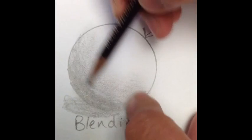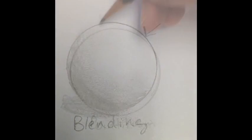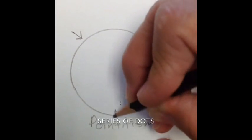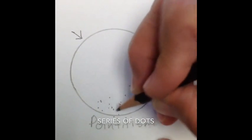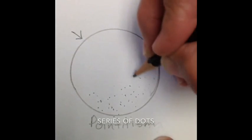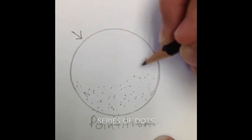Pause the video to finish your blending technique. Our last shading technique that I'm having you do is called pointillism. It's a series of dots that you randomly put on. However, you add more dots the closer you get to the bottom of your sphere.